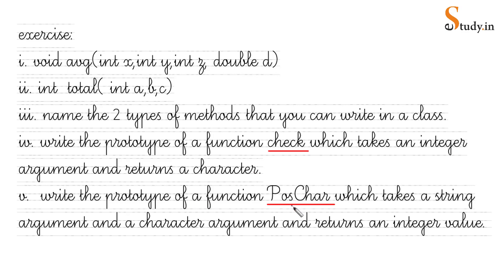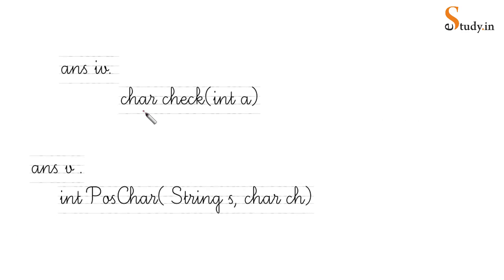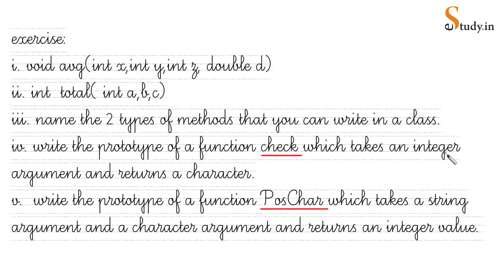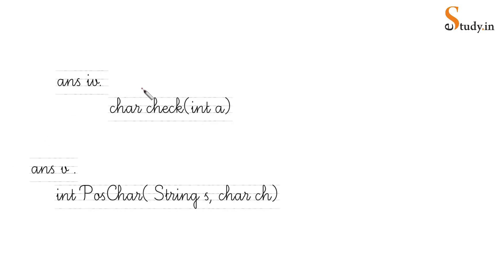Also write the prototype of a function named 'poscat' which takes a string argument and a character argument and returns an integer value. The answers: for 'check' — 'char check(int e)'; for 'poscat' — 'int poscat(String s, char c)'. For the string parameter, write String with a capital S and give any name to the object.